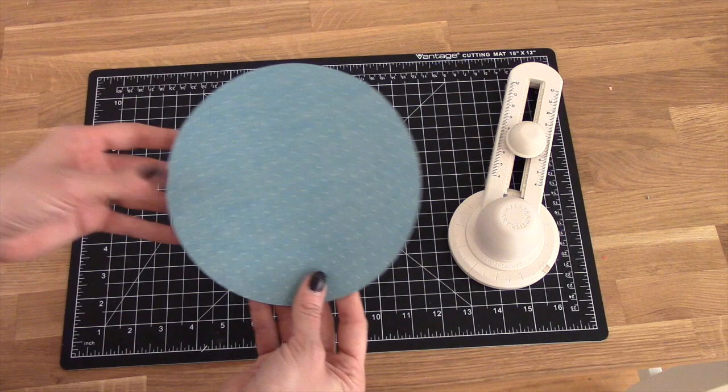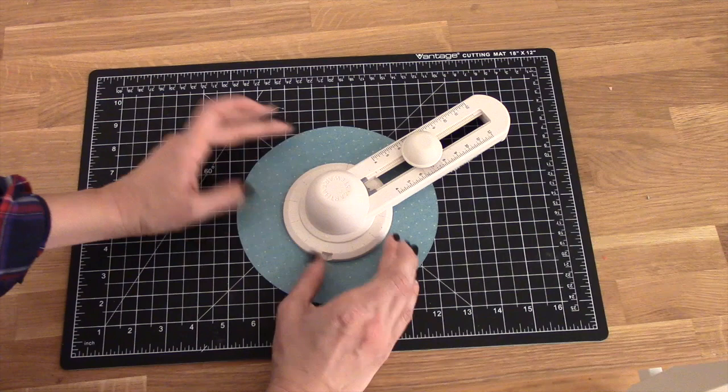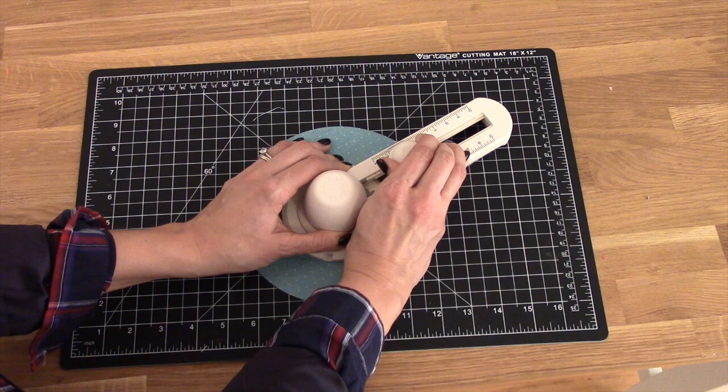Perfect circle. And if you want to take it a step further, you can actually cut out the center of your circle. To do that, you're just going to once again center your cutter on your circle, and then you want to make sure the measurement is smaller than the measurement you made the circle. So for this, we'll just take it down to, let's say, 5 inches.